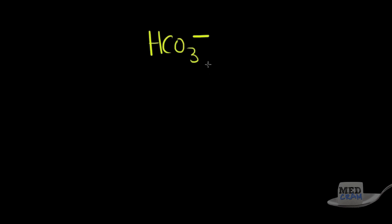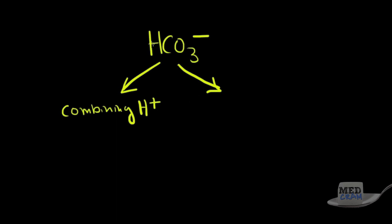Bicarbonate is an unusual situation. There are two ways bicarb can go down, causing a metabolic acidosis. One way is that it combines with a proton — bicarbonate plus a proton turns into carbonic acid, which then becomes water and CO2, which is breathed off. The other way is simply direct loss of bicarbonate — you lose it by peeing it out or pooping it out.